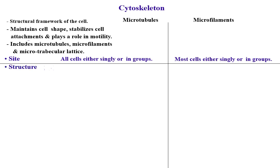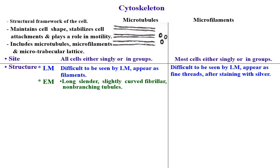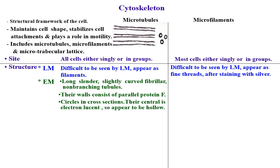By light microscope, microtubules are difficult to see and appear as filaments; microfilaments are also difficult to see and appear as fine threads after staining with silver. By electron microscope, microtubules appear as long, slender, slightly curved, fibrillar, non-branching tubules. Their walls consist of parallel protein filaments and they appear as circles in cross-section, with an electron-lucid central zone, so they appear hollow.